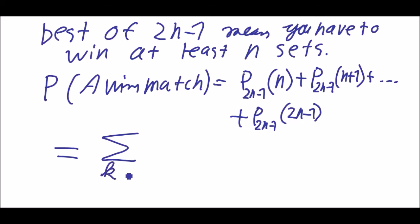The elegant form: from k equals n to 2n minus 1, the sum of the probabilities P(2n-1 choose k) times p to the k times (1-p) to the (2n-1-k).